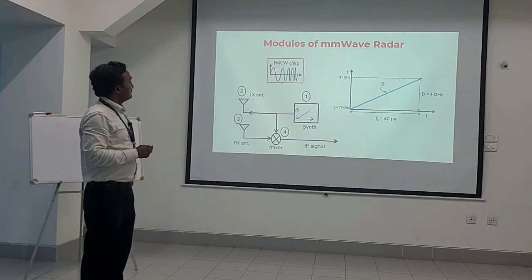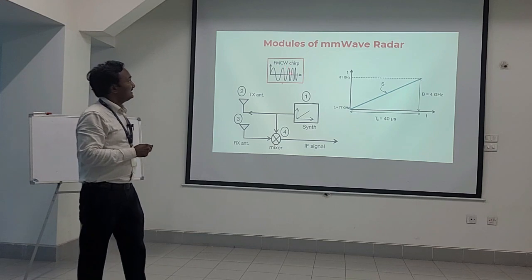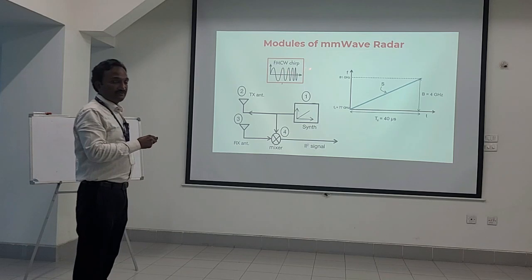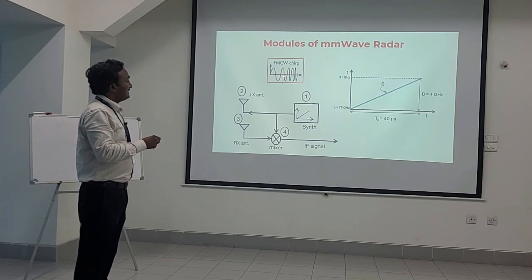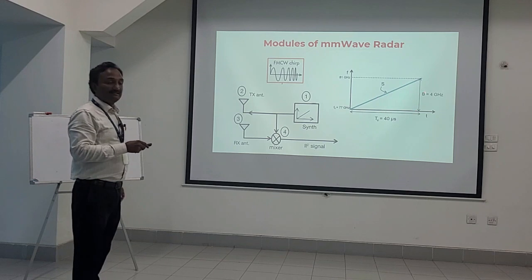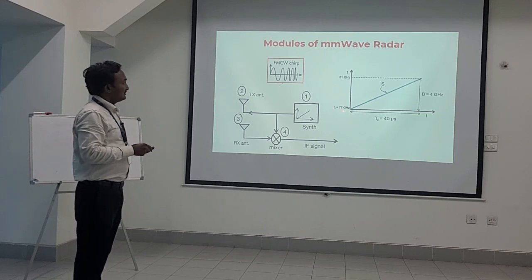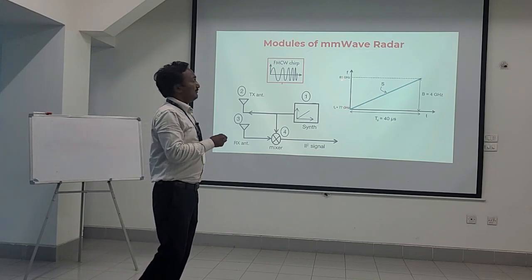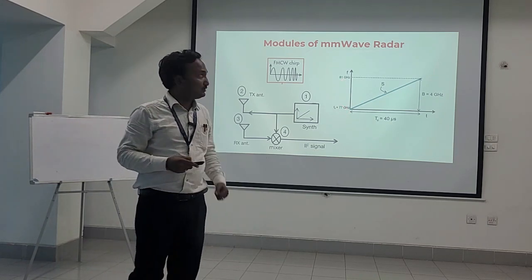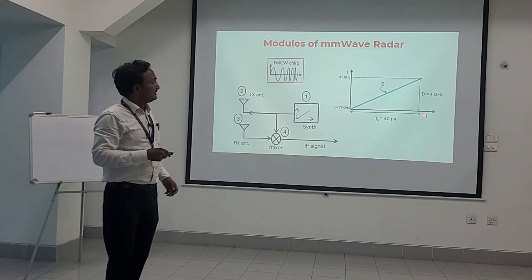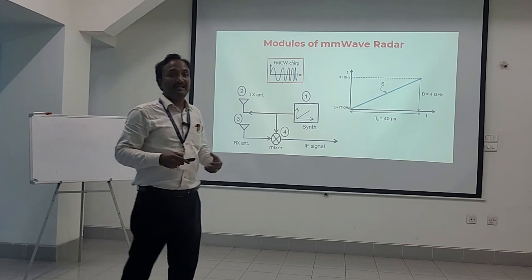This intermediate frequency signal will help us extract the three important measurements performed by the millimeter wave radar. As you can see in this figure, the frequency is increasing with respect to time. The starting frequency is 77 gigahertz and it can increase up to 81 gigahertz, giving a bandwidth of 81 minus 77 equals 4 gigahertz.